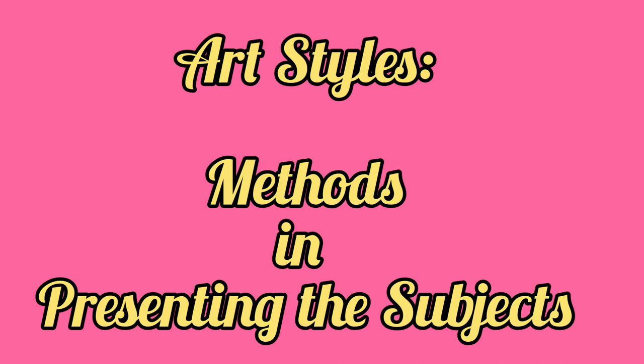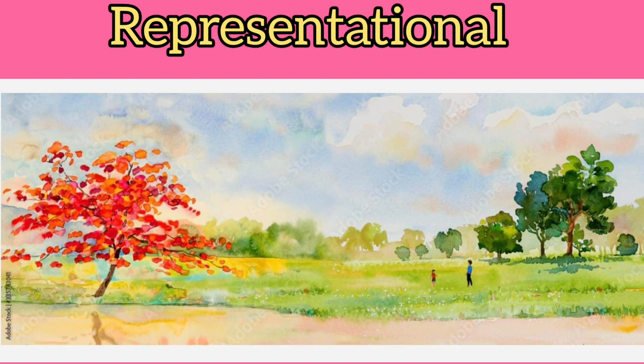Artists use different styles. A style refers to how the artists employ materials, use technique, and the manner in which a subject matter is portrayed. Styles are generally divided into two branches, namely representational or objective and non-representational or non-objective.